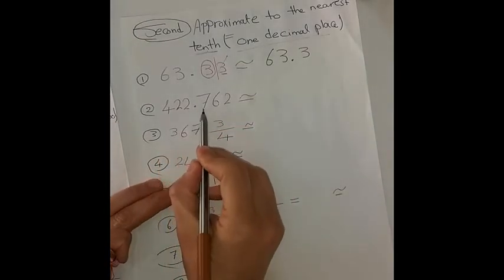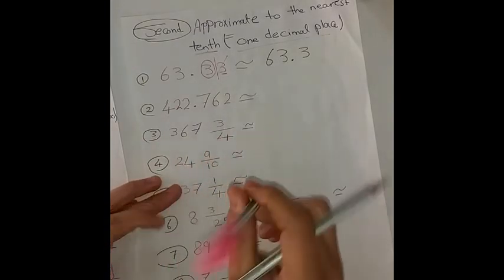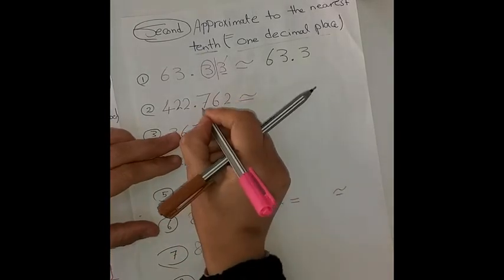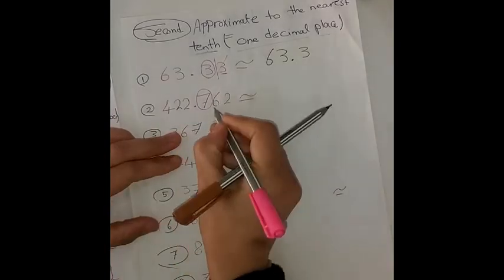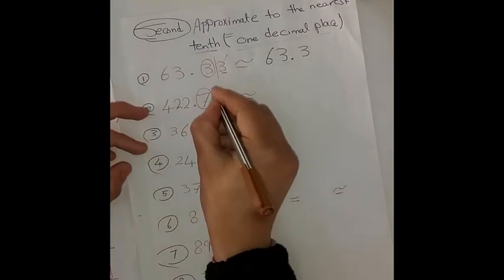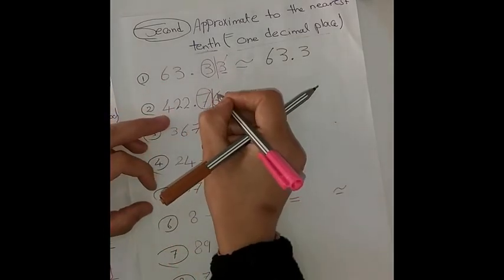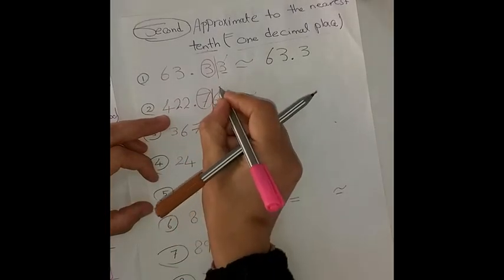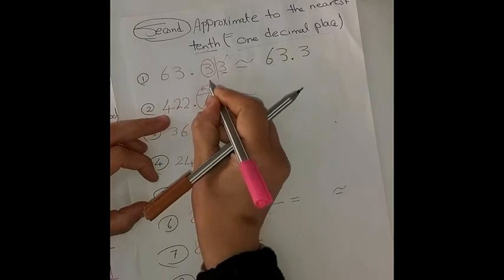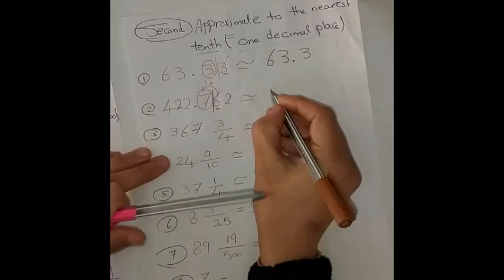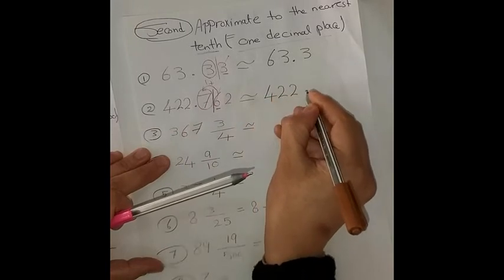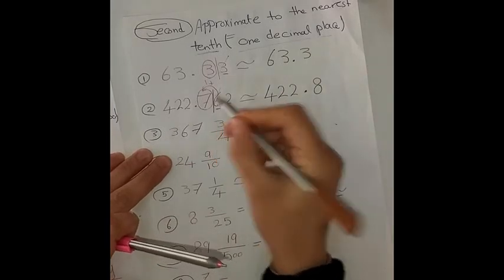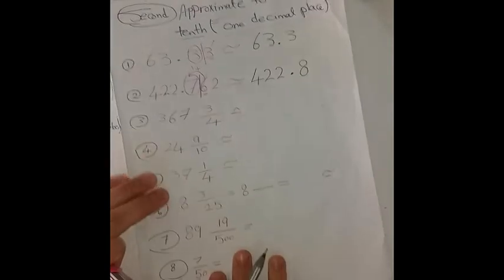Next example: 422.762. I want to approximate this number to the nearest tenth. I circle the tenth place — which is 7 — and look at its neighbor, which is 6. Six is a rich digit, so we cancel it and add one to the tenth place. Our result is 422.8.